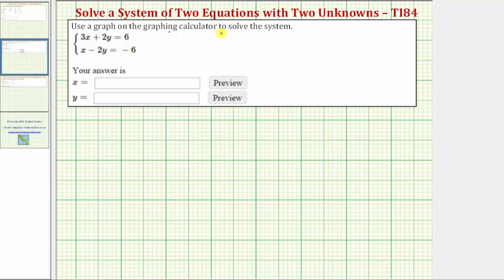We're asked to use a graph on the graphing calculator to solve the system of equations. Because we have two equations with two unknowns, a solution is an ordered pair (x, y) that satisfies both equations.